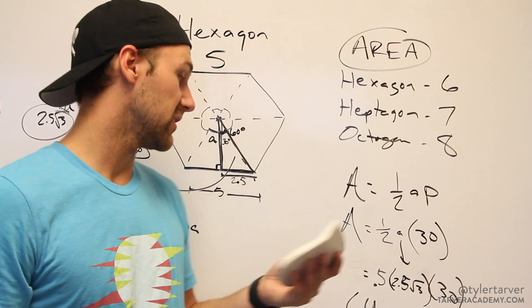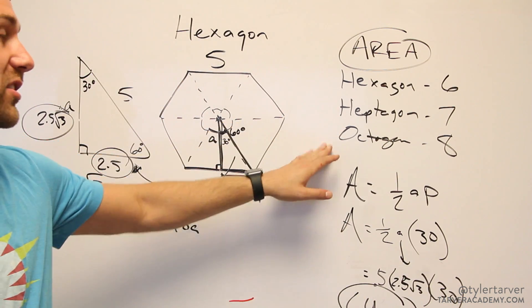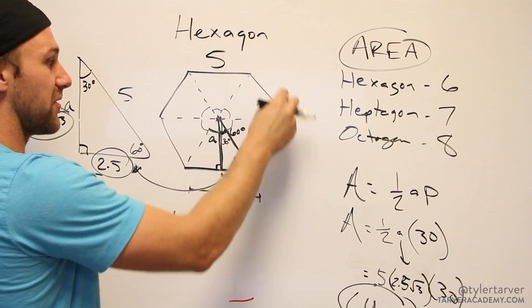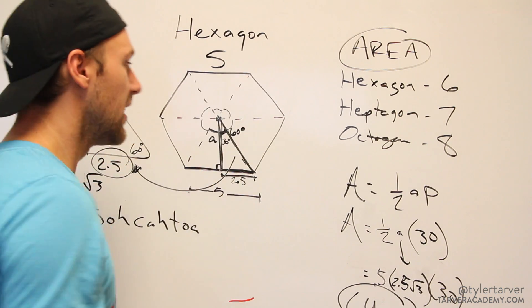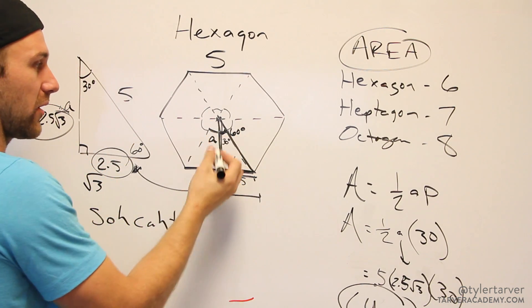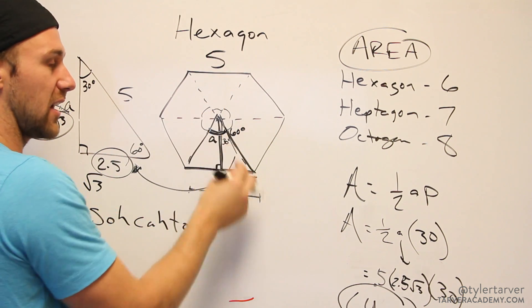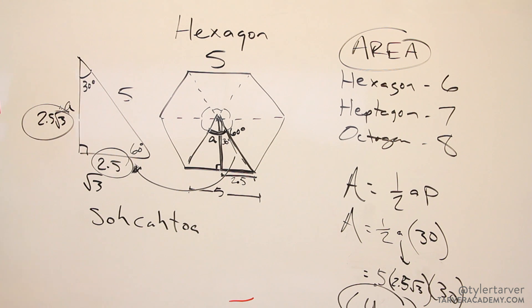Now for heptagon and octagon you're gonna do the exact same thing. The only thing that will change is if the perimeter is a different amount, and you've got seven sides or eight sides, and then your interior angle amount. Here our interior angles are 60 for every hexagon - it's always gonna be 60 degrees inside.